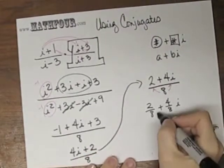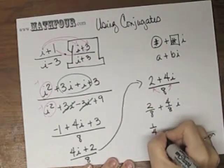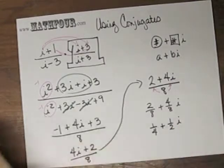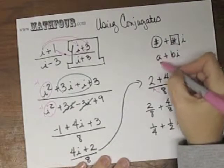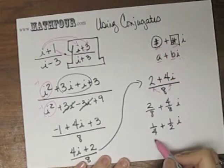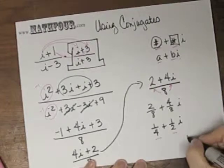And because I'm a whiz bang with fractions, watch me screw this up. I have 1 fourth plus 1 half i. And it's not entirely pretty, but it is this shape. We've got a number plus a number i. A number plus a number. Here's number, number, i. And we're all good.